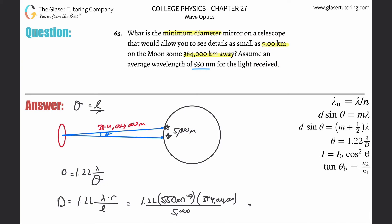And go to town. So 1.22 times 550 times 10 to the minus 9 times 384 million, and then divide that by 5,000. I get a value of about 5.15 times 10 to the minus 2. That's in terms of meters - it's about 51 millimeters. That would be the diameter.